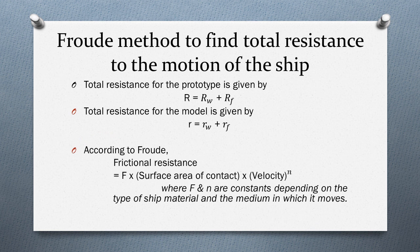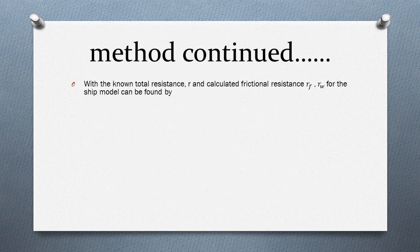According to Froude, the frictional resistance Rf is given by F × a × V^n, where F and n are constants depending on the type of ship material and the medium in which it moves. With the known total resistance for the model and the calculated frictional resistance, the wave making resistance Rw for the model can be found as: total resistance minus frictional resistance.